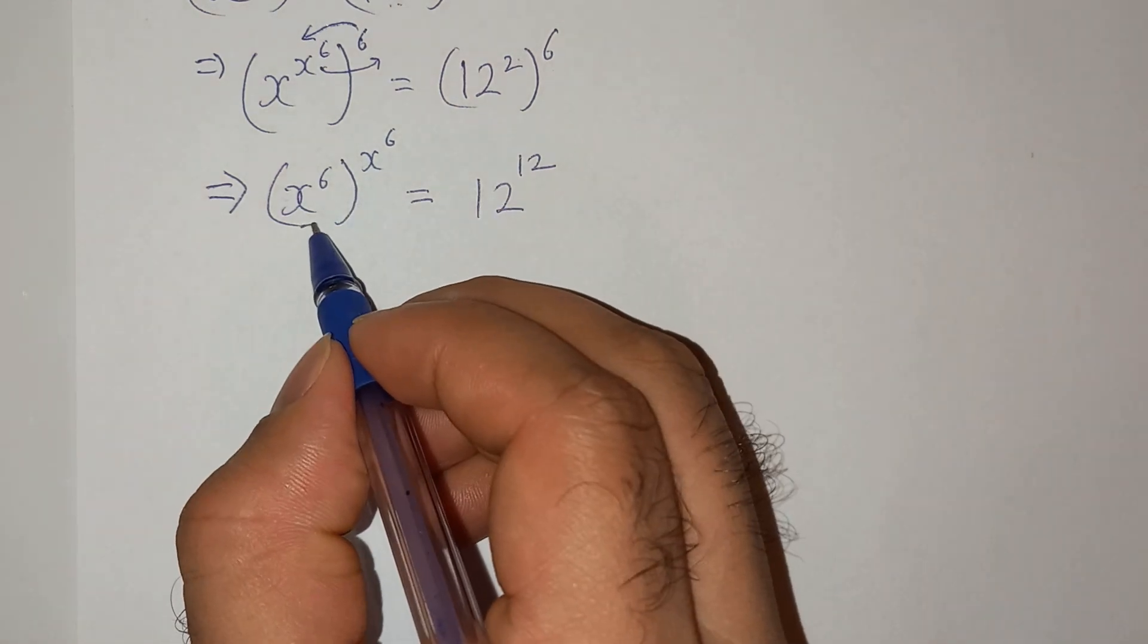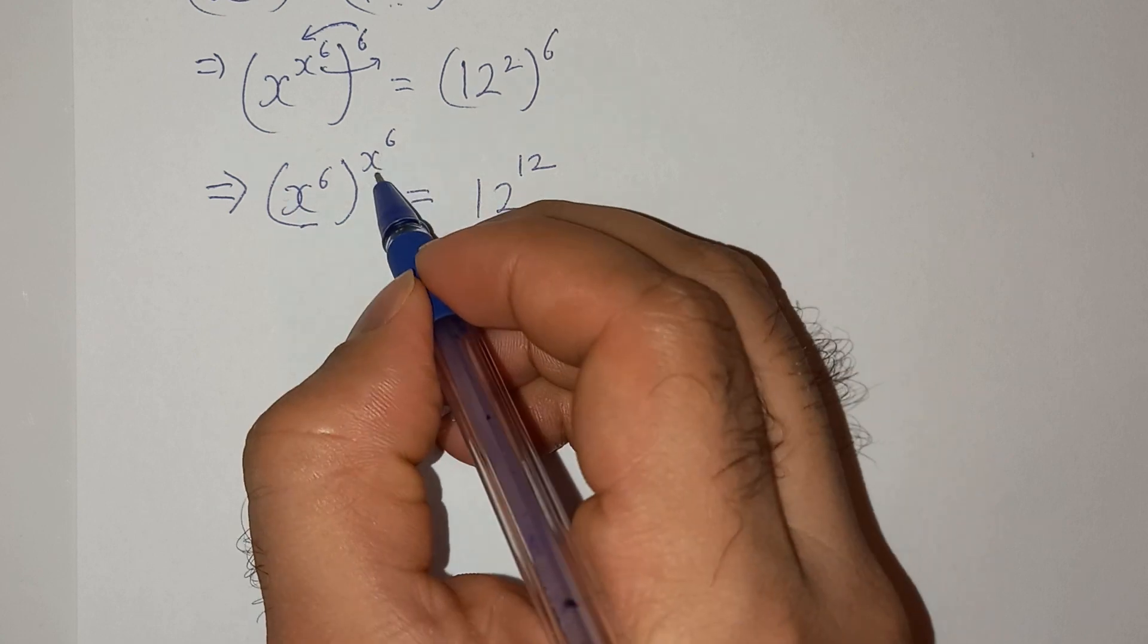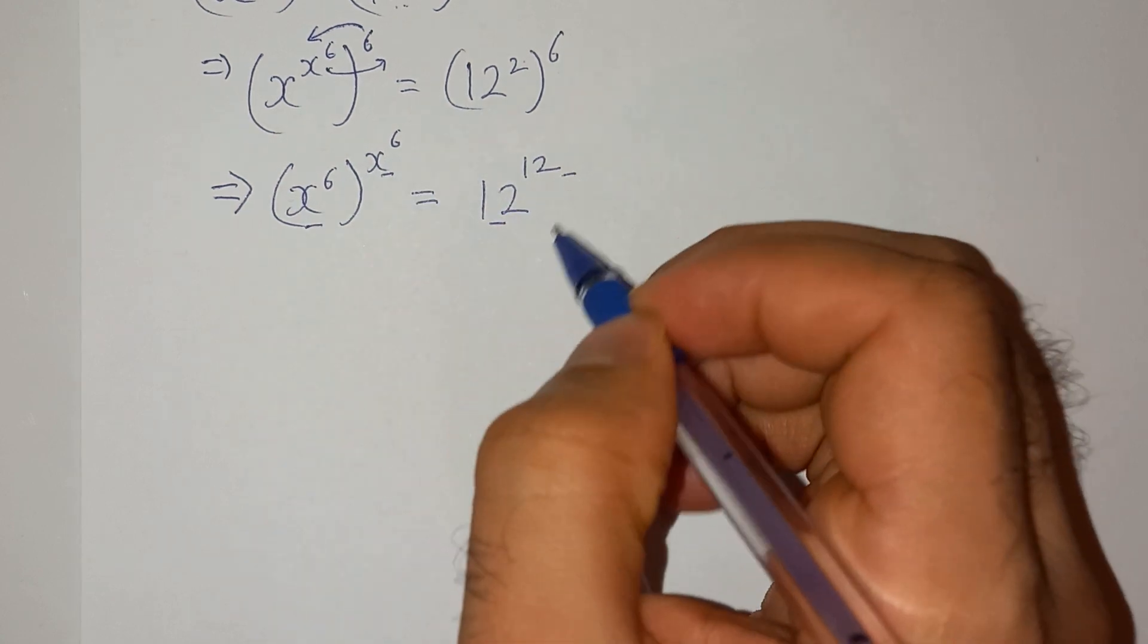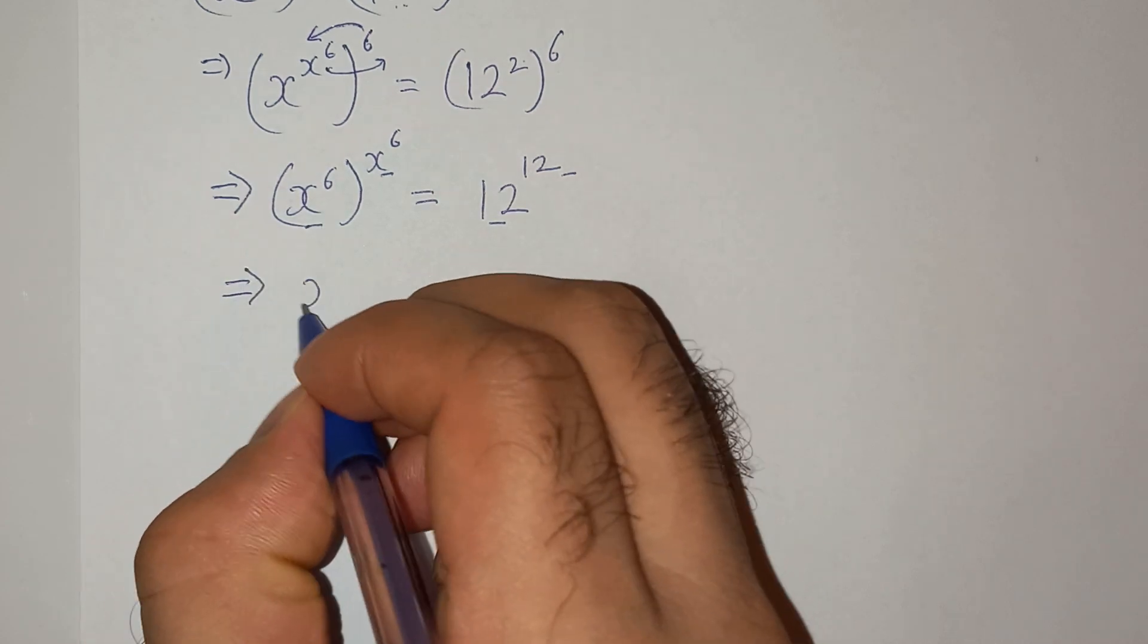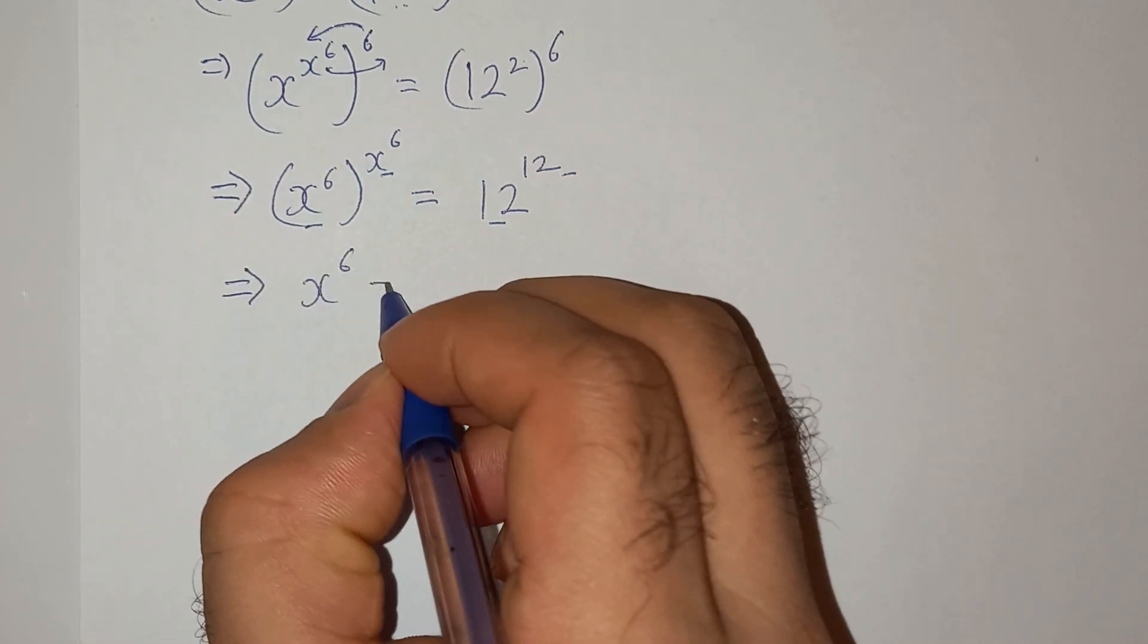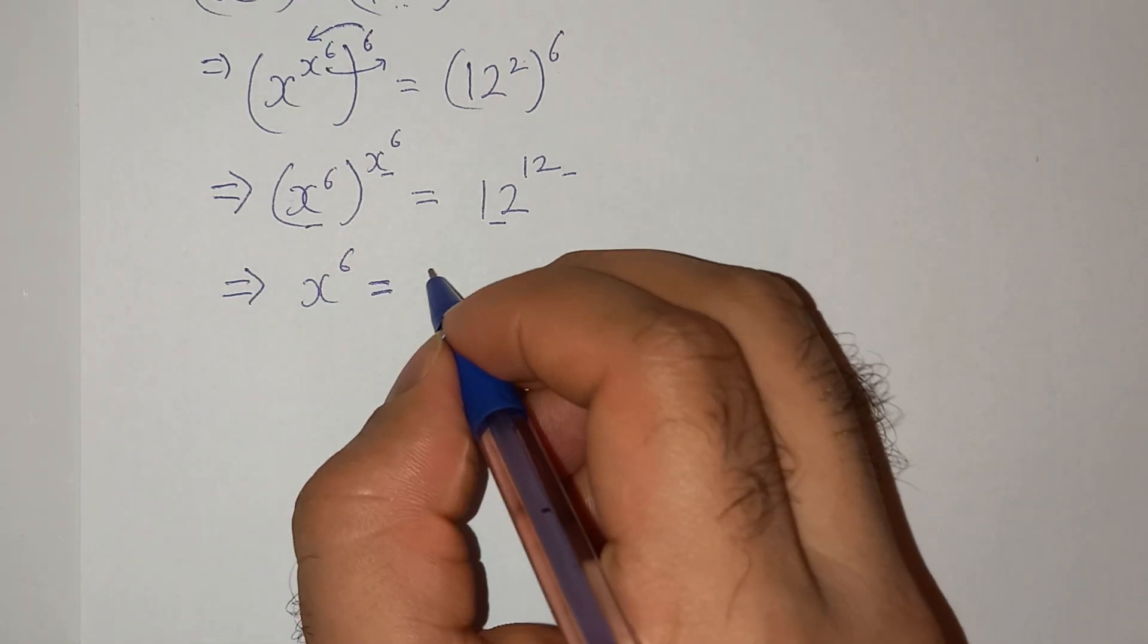Now as you can see that the base on left hand side and the exponent on left hand side and right hand side are the same, we can conclude that x^6 = 12.